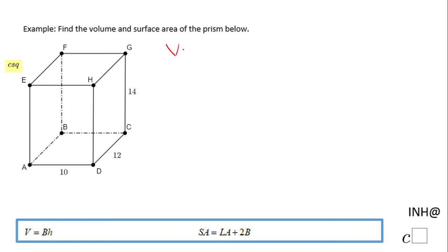of a prism is equal to B times H, where B is the area of the base and H is the height of the prism.